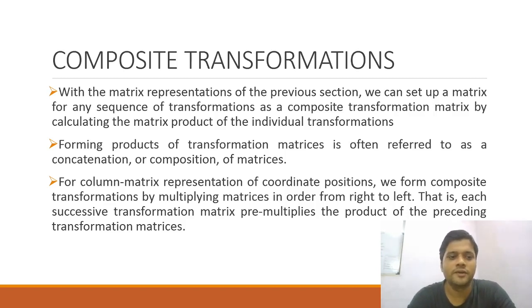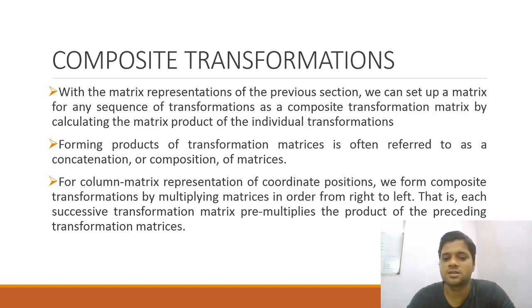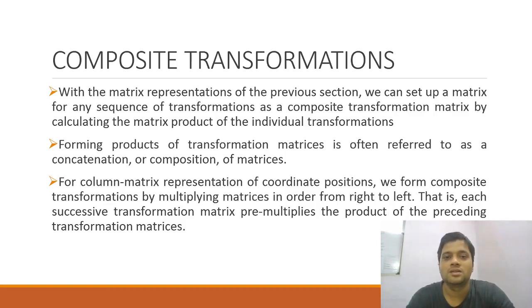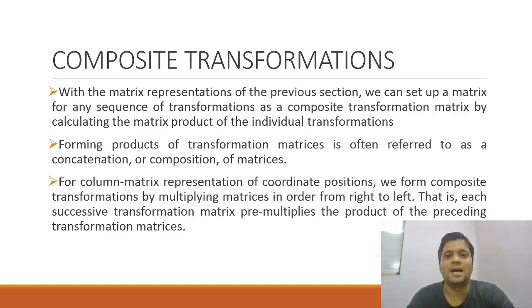Forming products of transformation matrices is often referred to as concatenation or composition of matrices. For a column matrix representation of coordinate positions, we form composite transformations by multiplying matrices from right to left. The object matrix should be written on the extreme right-hand side, followed by the transformation matrices pre-multiplied to the left in sequence. The last transformation would be the leftmost matrix.